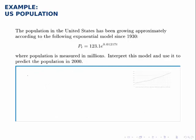The second thing we're asked to do is predict the population in 2000 using this model. So we'll take this model and let t equal 70, because we're predicting 70 years after the initial point, after 1930.